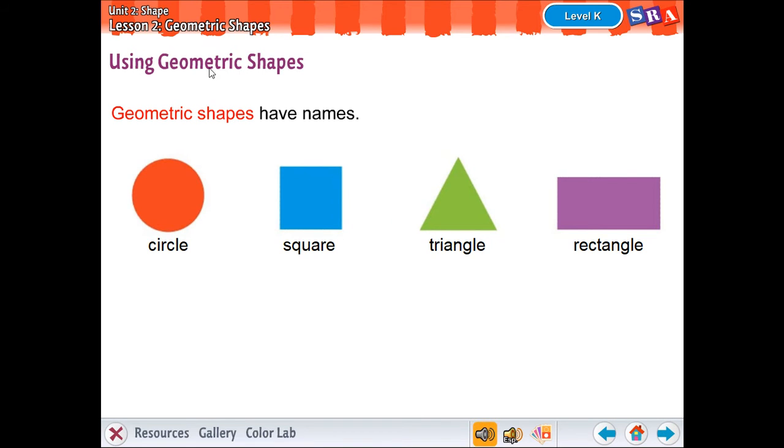So using geometric shapes, boys and girls, you know what a geometric shape is. And if you don't, we're going to go over it today. This is called a what? Circle. Correct, that is a red circle. This one is what? Yes, you're right, a square, a blue square. And this one you're thinking is a triangle, a green triangle. And this one right here is a purple rectangle.